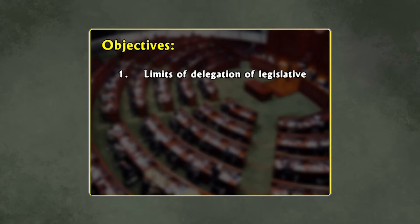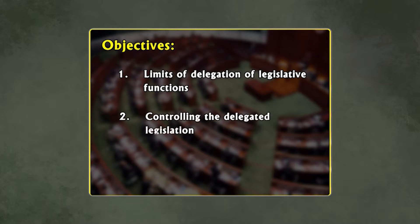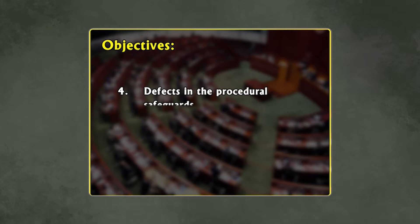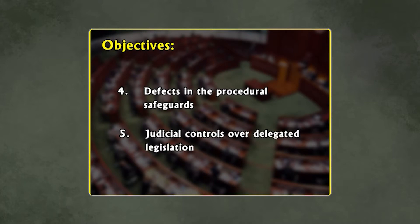Number one: to trace out the limits of delegation of legislative functions. Number two: to bring out the basis for controlling the delegated legislation. Number three: to understand the importance of parliamentary control. Number four: to detect the defects in the procedural safeguards. Number five: to establish the basis of judicial controls over delegated legislation.